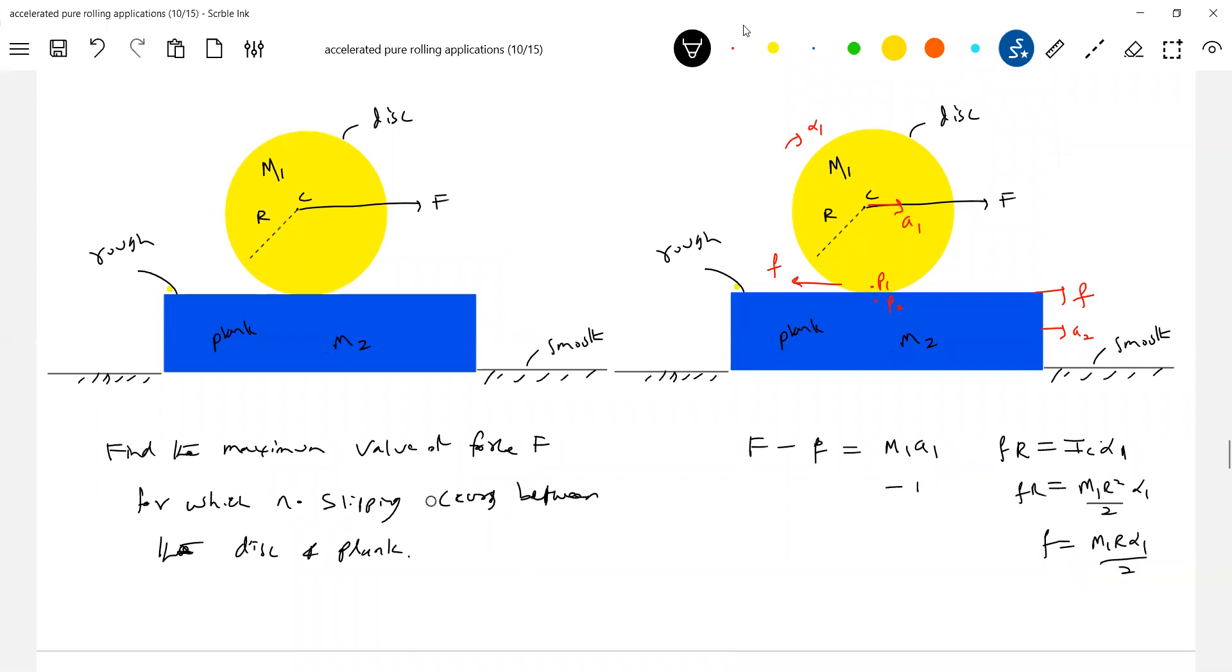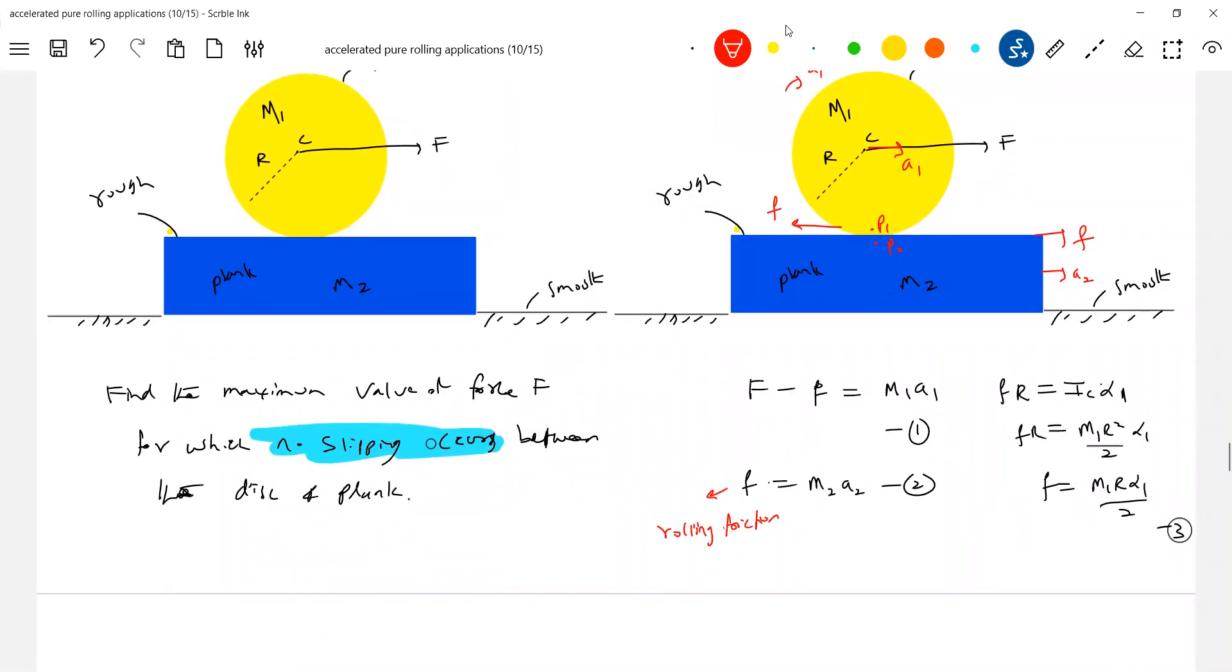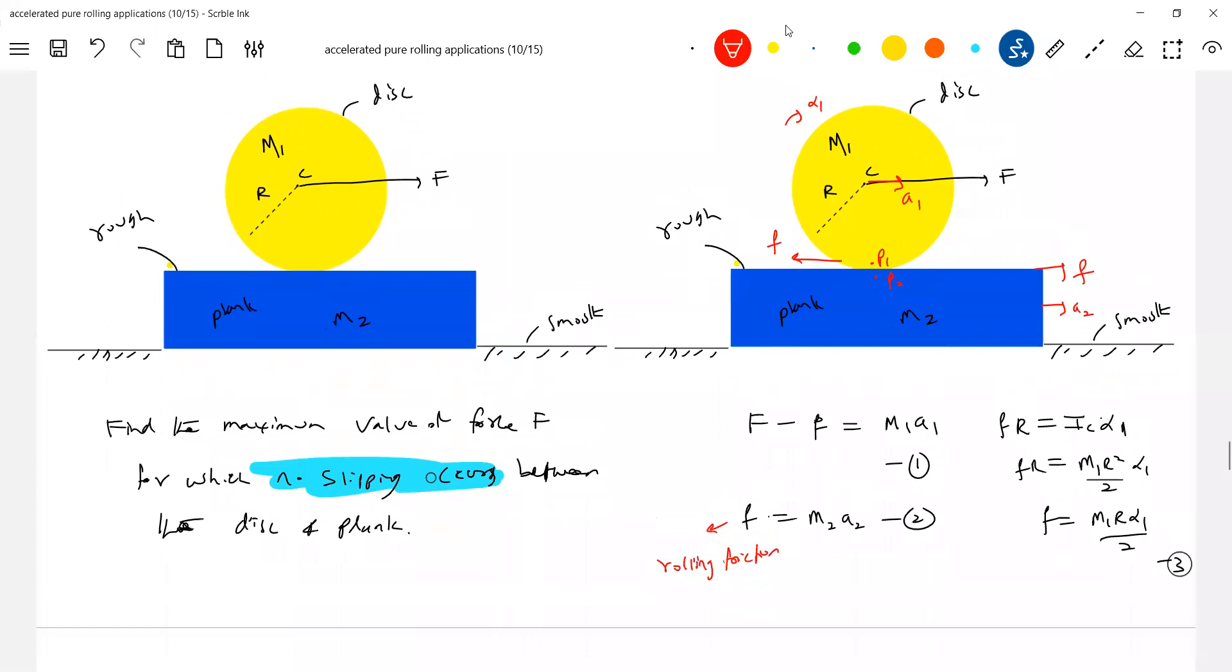Call this equation 1, this equation 2. Now then for the plank, f should be equal to m2 a2. Keep it here. Now how many unknowns are there? a1, a2, alpha 1, and friction - four unknowns. We need one more equation. No slipping occurs. For no slipping occurs, what is the meaning of no slipping occurs? The acceleration of point p1 must be equal to point p2, and what is the friction acting is the rolling friction. So what is f strictly? I should call this rolling friction. Then condition for no slipping, what is the equation? You can write it as a1 minus r alpha 1, acceleration of point p1 should be equal acceleration of point p2.